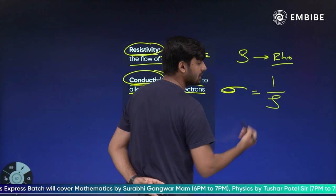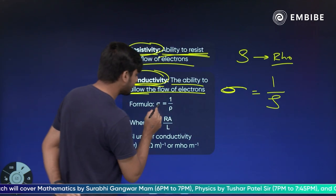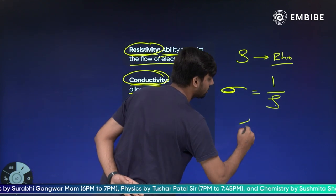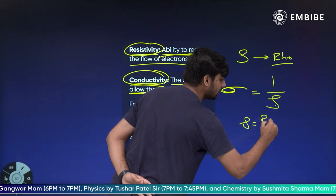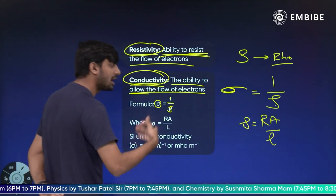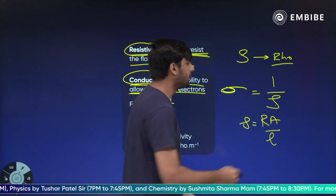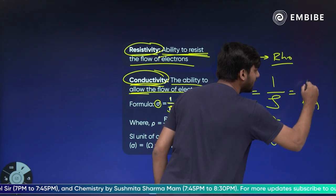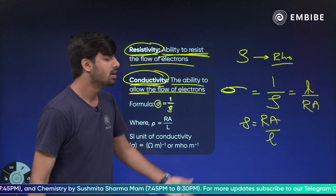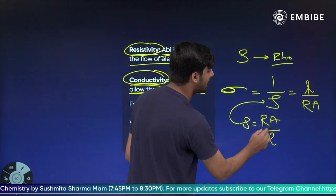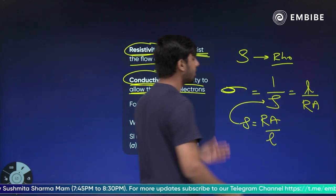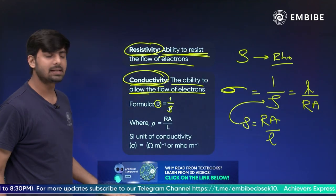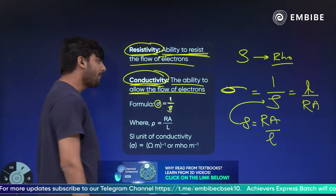Conductivity is 1 upon resistivity. So conductivity symbol σ is 1 upon resistivity ρ. Resistivity ρ into area upon length. If you want to put it in this particular formula and substitute here R A and L, up R simply I substitute. R is length upon ρA. So resistivity formula put conductivity, simple as that.